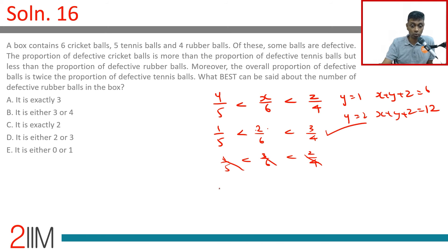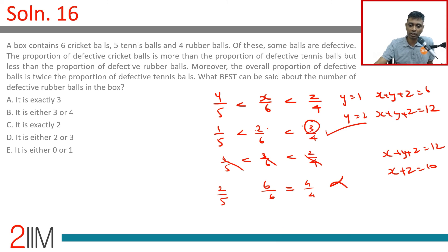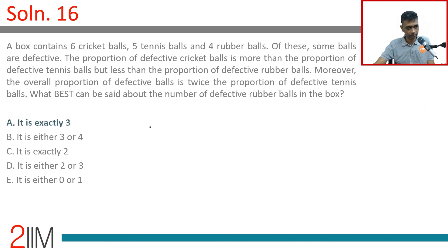If y = 2, then x + y + z = 12, so x + z = 10. The maximum x can be is 6 and maximum z can be is 4, giving exactly 10 — but then x/6 = 1 and z/4 = 1, making them equal rather than strictly less than. So y = 2 is not possible at all. Therefore, the number of defective rubber balls must be exactly 3, with y = 1, x = 2, z = 3.